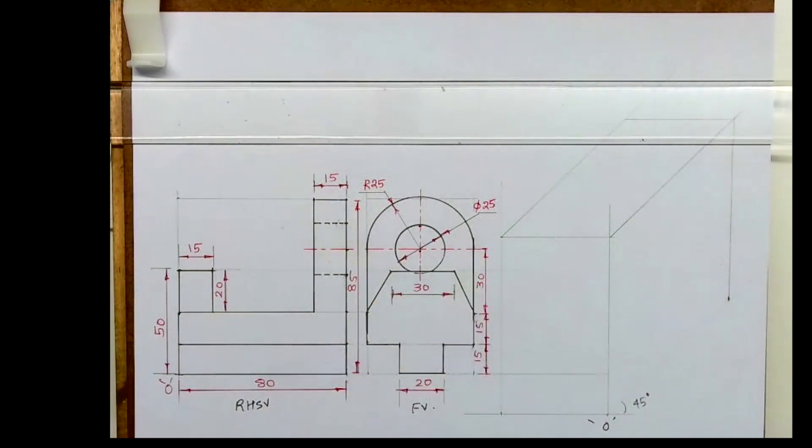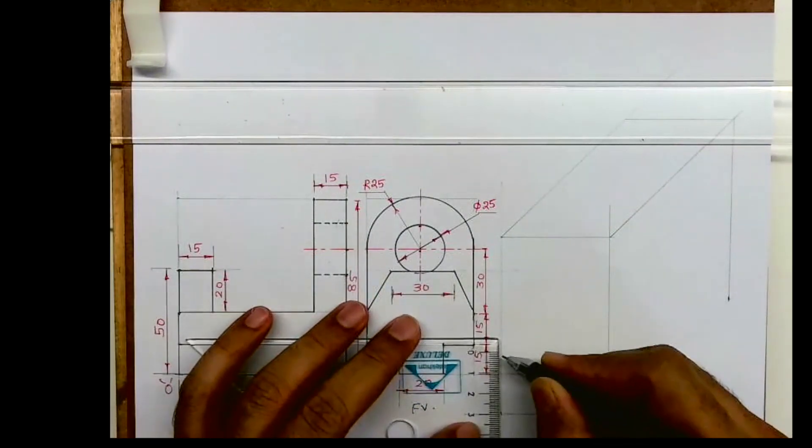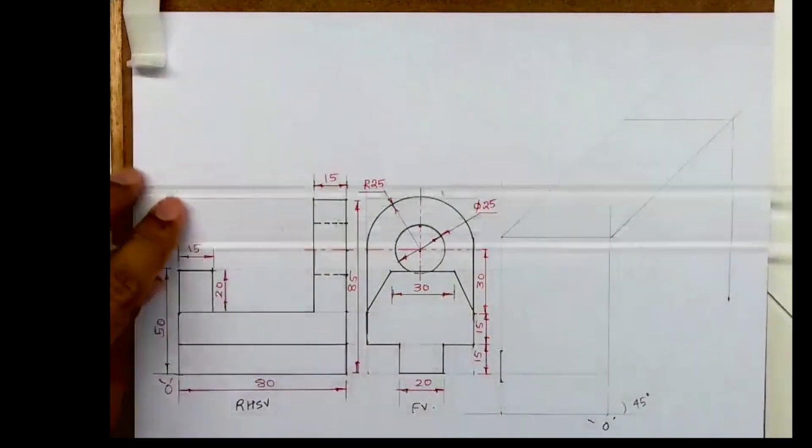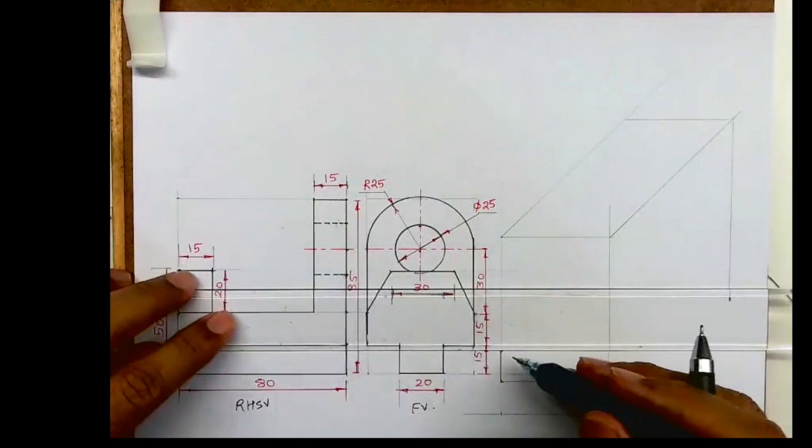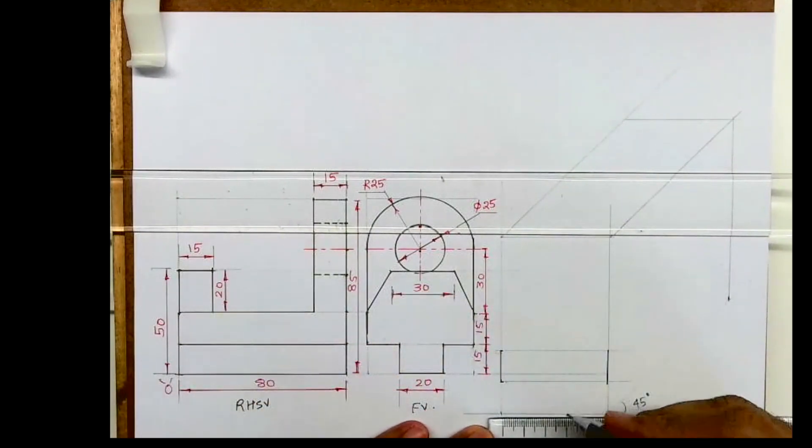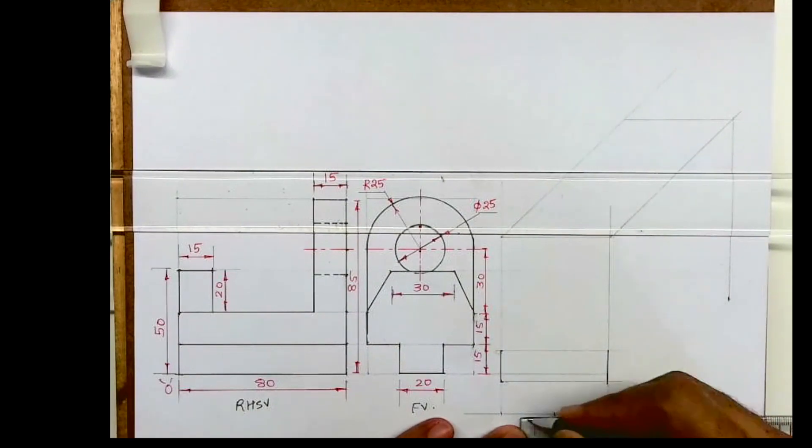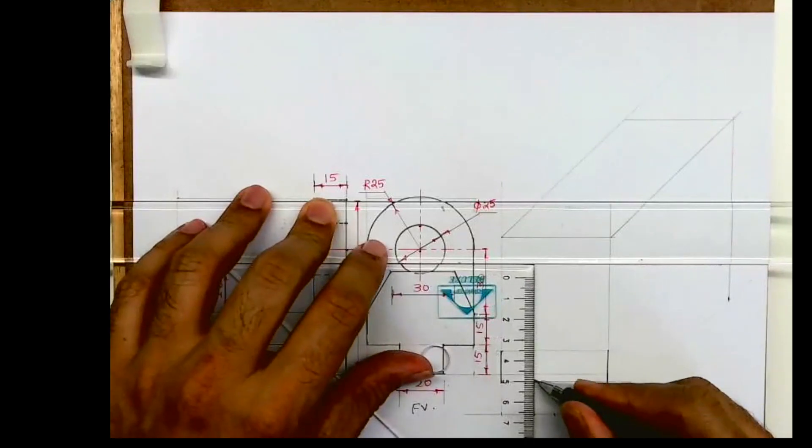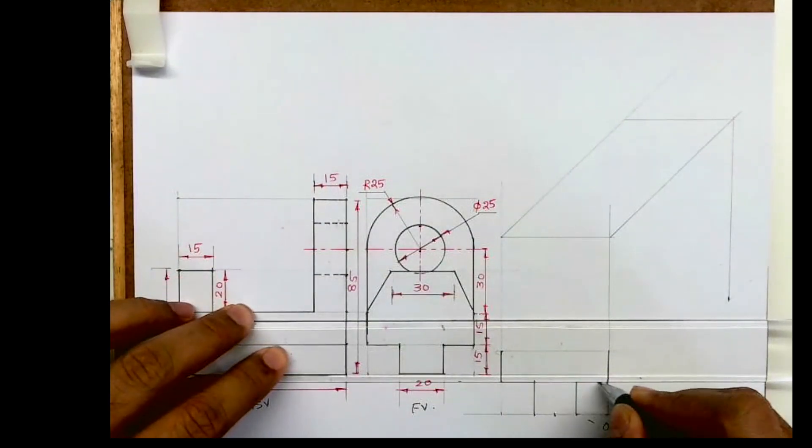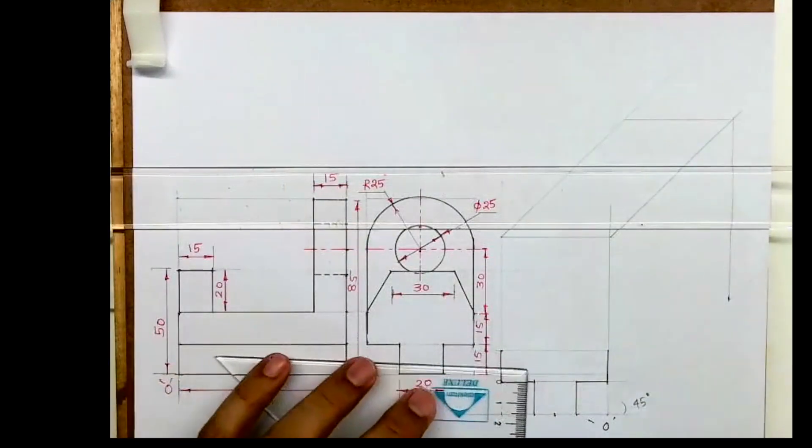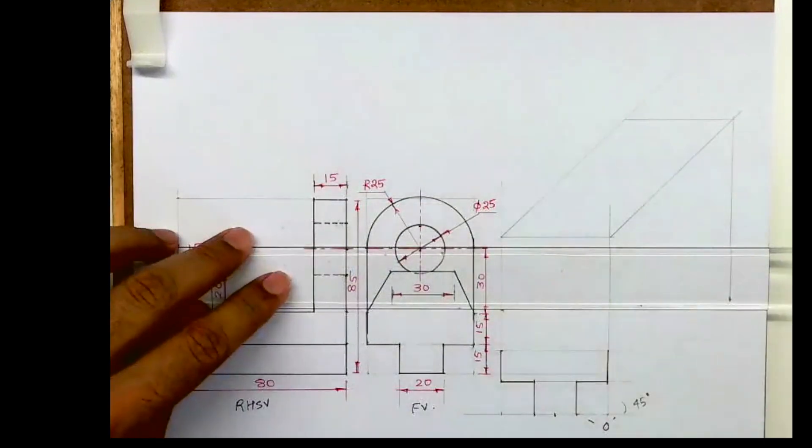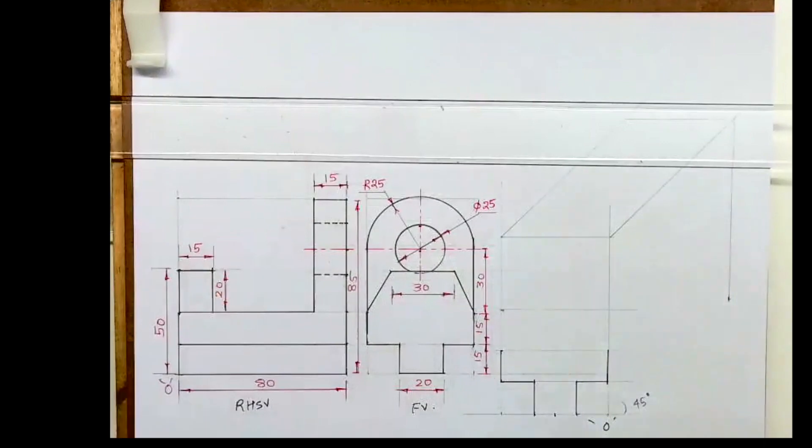First see this part, so I will draw that. I will mark 30, 15, 15, 30. Then you take midpoint and you take 10, 10 on both sides. After that, see this entire structure's height is 50, so we'll mark 50 from bottom.